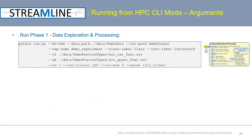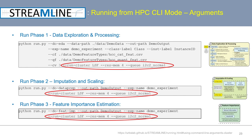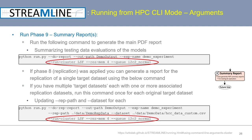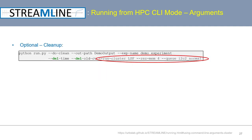Now let's look at running Streamline on an HPC one phase at a time using command line arguments. We'll start with phase 1 — the same command as before except we don't specify runParallel. RunCluster is now set to LSF rather than false since we're running on an LSF cluster, we specify a reserved memory of 4GB, and the queue is called I2C2Normal. For all other phases, the commands are the same except for these four differences. Here are phases 2, 3, 4, 5, 6, 7, 8, and generating the two types of reports in phase 9.